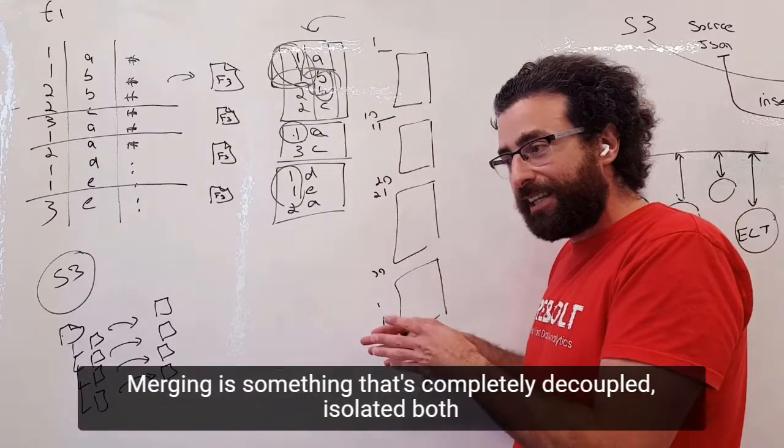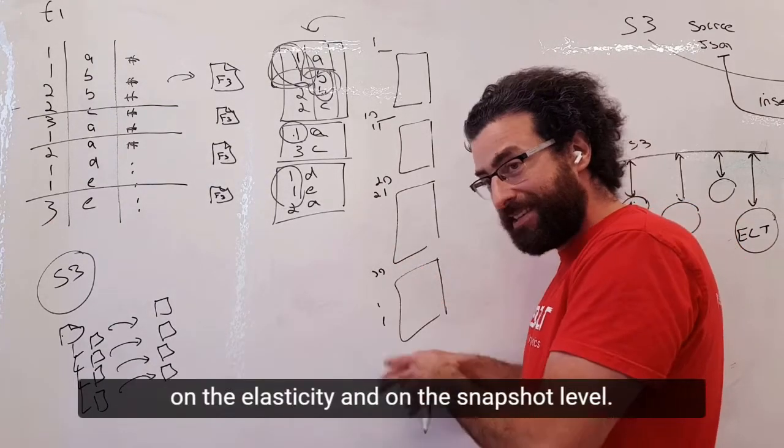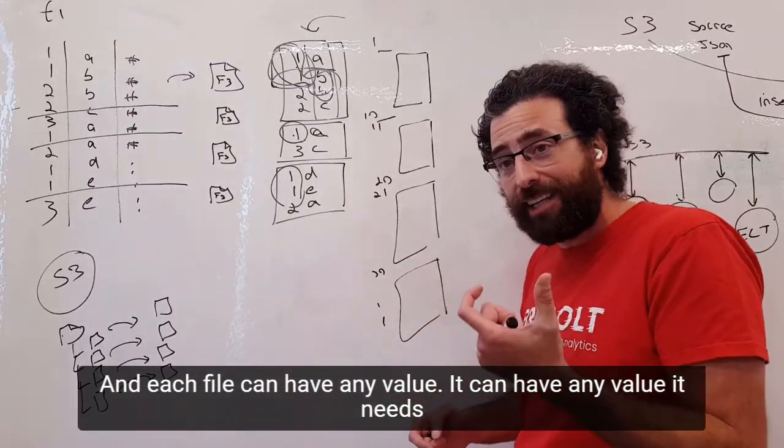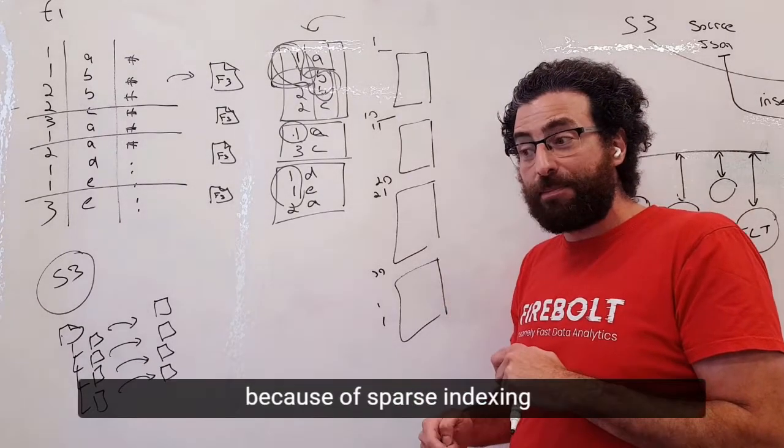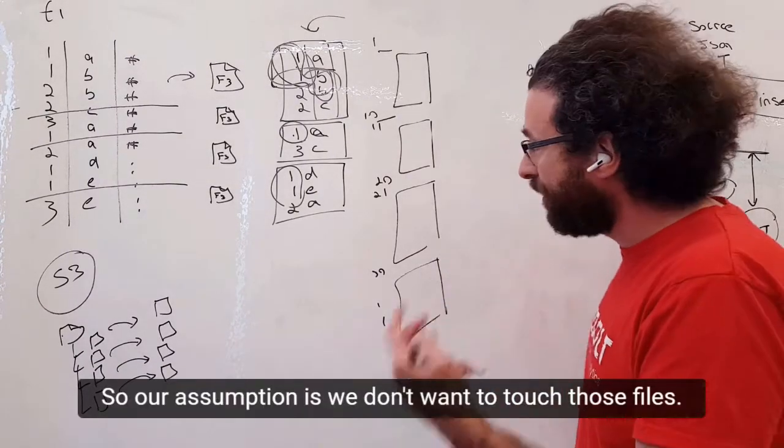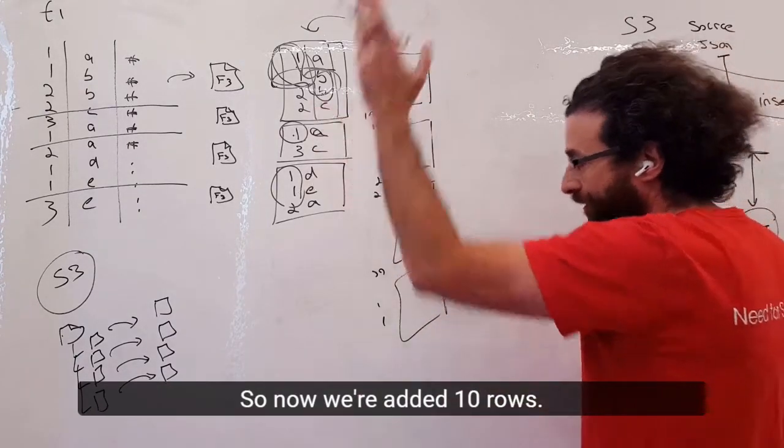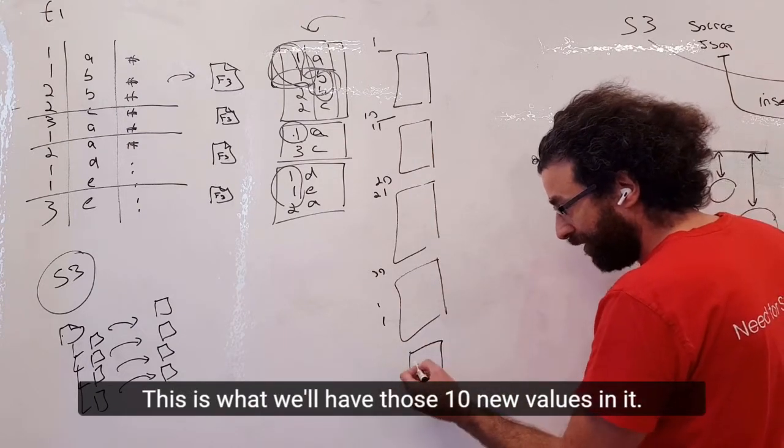Merging is something that's completely decoupled and isolated, both on the elasticity and on the snapshot level. Each file can have any value it needs because of sparse indexing. Our assumption is we don't want to touch those files. So now we've added 10 new rows. This is what we'll have, those 10.